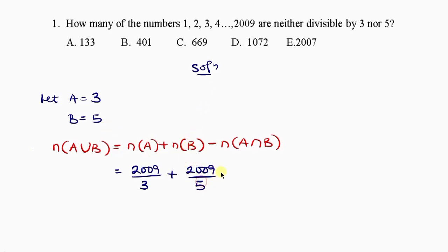Minus the cardinality of A intersect B means we take 2009 and divide it by A intersect B, which means we multiply A and B which is 3 times 5 gives us 15.